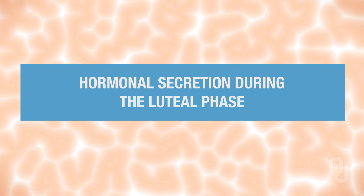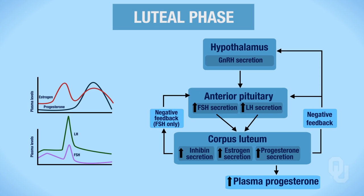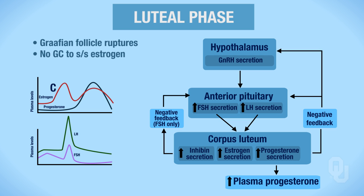Keep in mind that the Graafian follicle has ruptured, so there's no longer a follicle. If you recall from the previous video when I labeled this estrogen level here as C, that was due to the granulosa cells. Well, during the luteal phase, the Graafian follicle has ruptured, so there is no more follicle, therefore there are no more granulosa cells to synthesize and secrete estrogen.